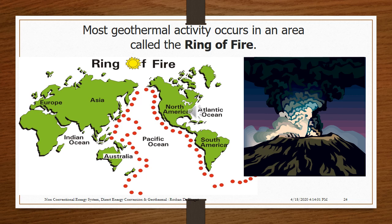Even though geothermal energy is underground, there are visible features on the surface, including volcanoes, hot springs, and geysers. A volcano means hot magma is near the surface. The most active geothermal resources are usually found where earthquakes and volcanoes are concentrated. Most geothermal activity occurs in an area called the Ring of Fire.